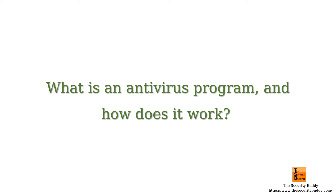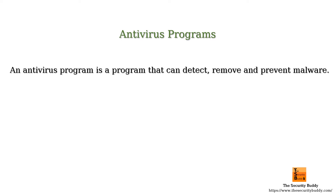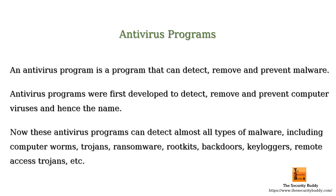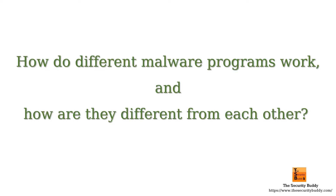What is an antivirus program and how does it work? An antivirus program is a program that can detect, remove, and prevent malware. Antivirus programs were first developed to detect, remove, and prevent computer viruses — hence the name — but now these antivirus programs can detect almost all types of malware, including computer worms, trojans, ransomware, rootkits, backdoors, keyloggers, and remote access trojans.